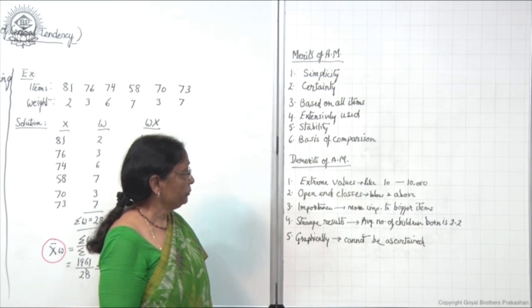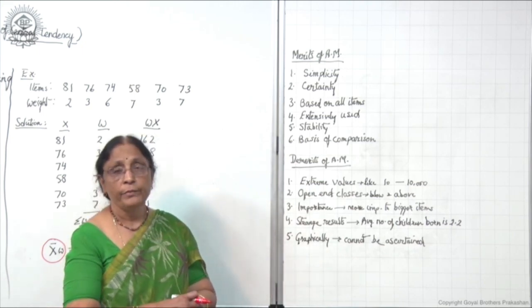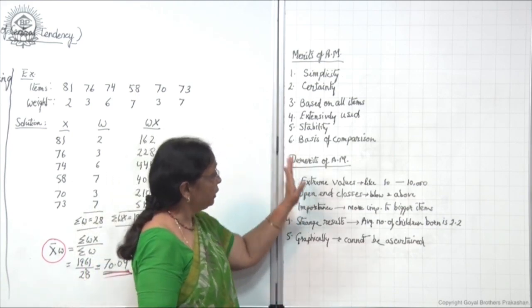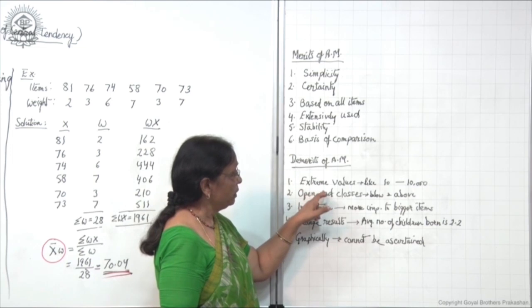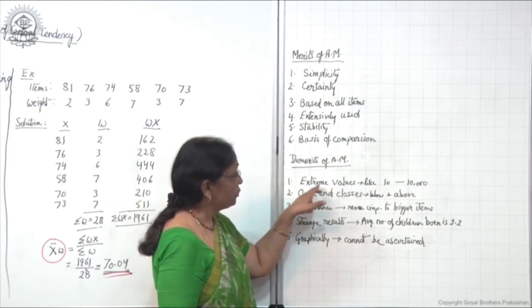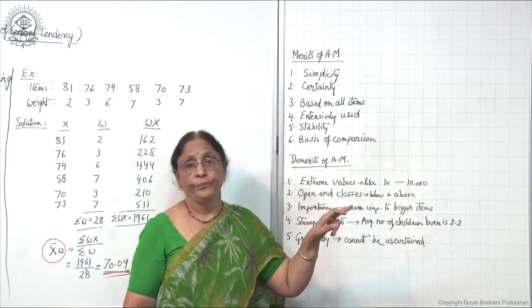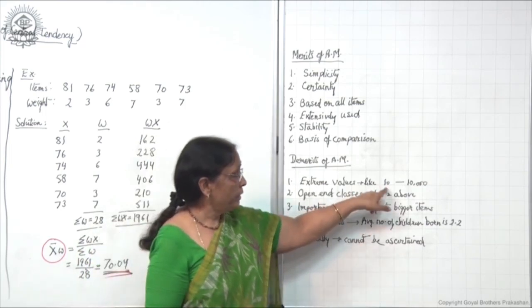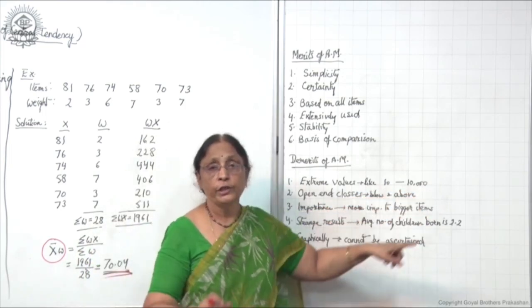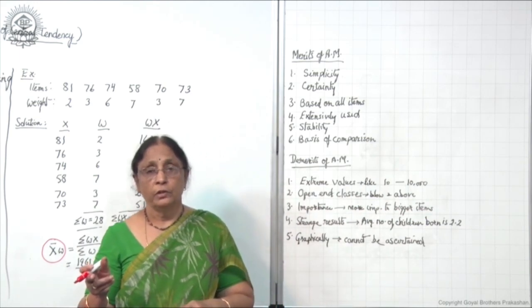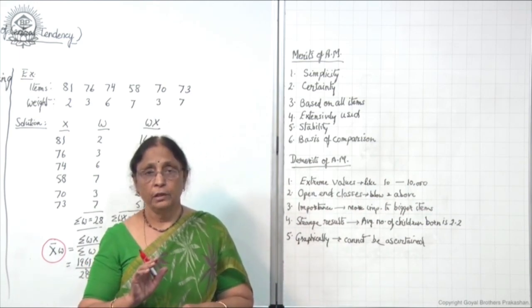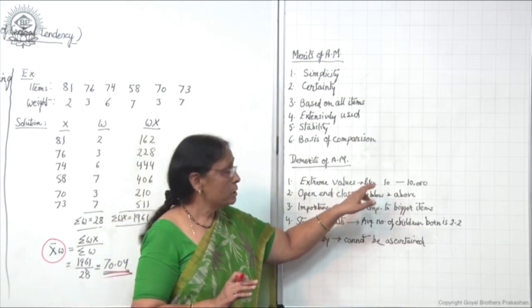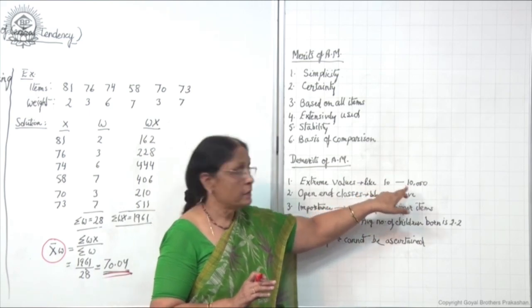Now, what are the demerits? Arithmetic mean has some demerits. Though it is widely used, it has certain drawbacks. The first demerit is extreme values. If suppose there is data of 10 items, the first value is 10 and the last value is 10,000. If you are taking out the average, suppose it is around 500, this is sometimes misleading, because the lowest value is very low and the highest is very high.